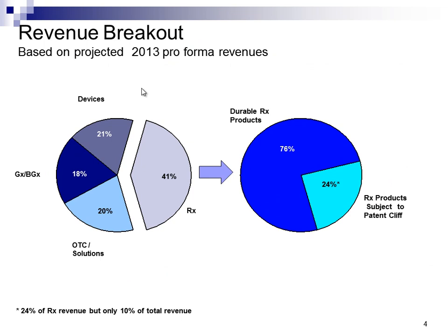Our next example is someone who's actually using a graph. People think that just using a graph in PowerPoint solves all the problems, but in this case there's a better way to show this. What they're trying to show here is that prescription products — that's what RX stands for — that are potentially an issue because they're going to come off patent are only a very small proportion of the overall projected revenue. So there's not a lot of risk here, that's what they're trying to show.